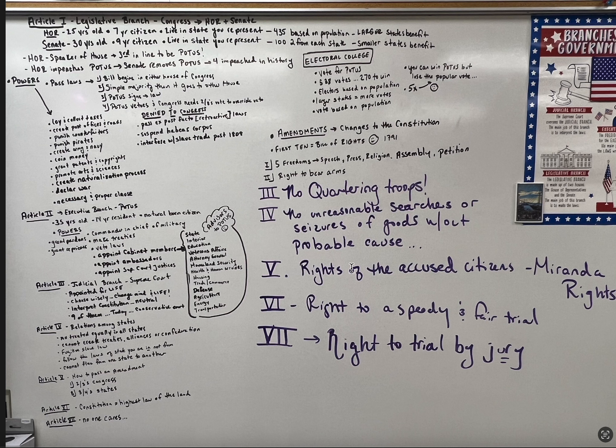The Fifth Amendment covers the rights of the accused citizens. You have the right to remain silent — if you give up that right, anything you say can and will be held against you in a court of law. You have the right to an attorney. You are innocent until proven guilty. Also, you can't be put in double jeopardy, meaning if you commit a crime and you are found innocent at trial, they can't just arrest you again and try you for the same thing. They've already found you innocent — they can't keep arresting you over and over.